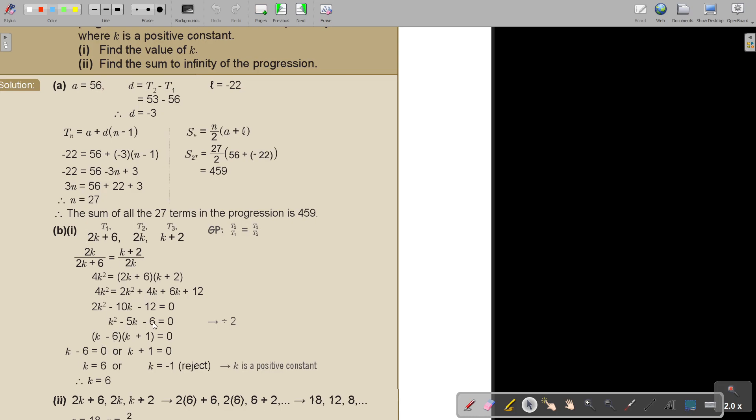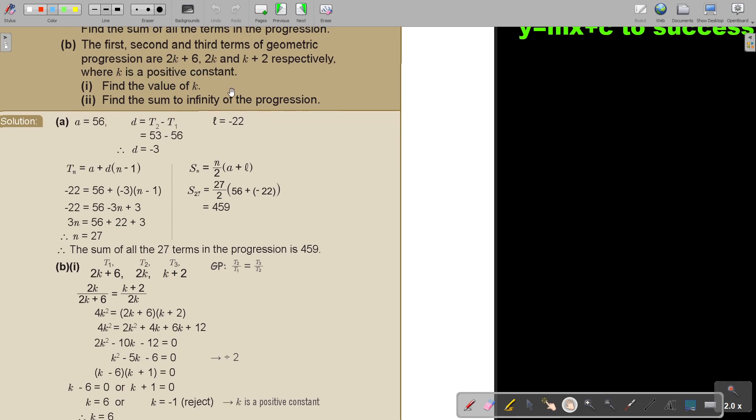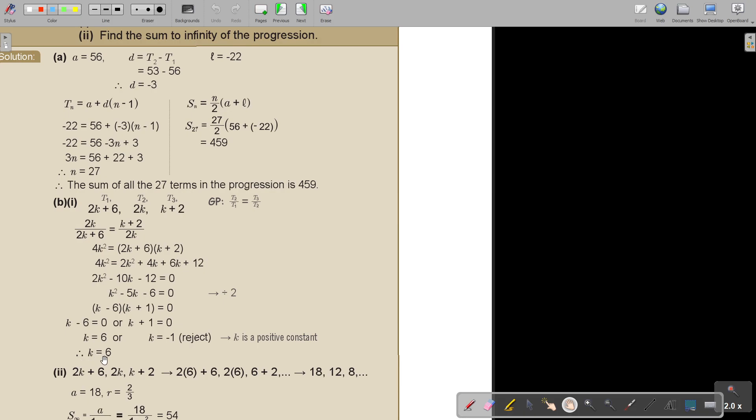I substitute, I cross multiply, I get a quadratic, I factorize and remember I get two values of k. Don't forget if I look back where they say k is a positive constant. So I reject negative and the value of k is 6.